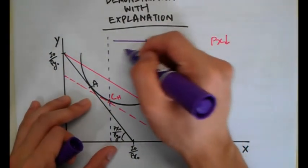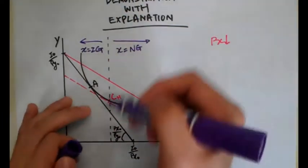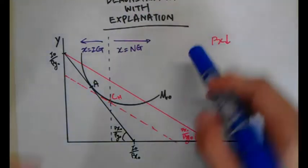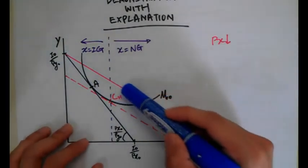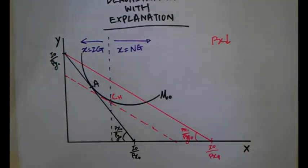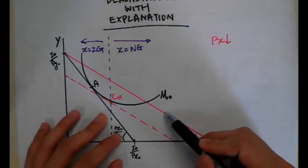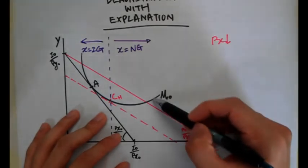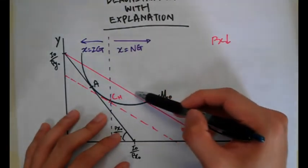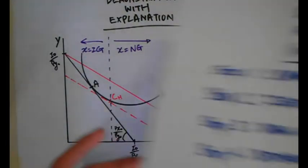Going this way, X will be a normal good; going this way, X is going to be an inferior good. Point B — the new equilibrium — if it lies along this side of the new budget line, X is a normal good; if it lies this way, X is an inferior good. An important thing to note: point B cannot lie here because that would mean the indifference curve intersects, which is wrong. It has to lie somewhere in this region inside the indifference curve.